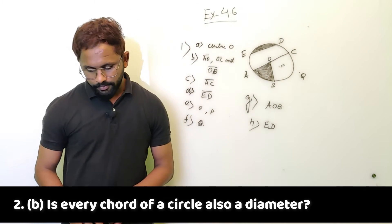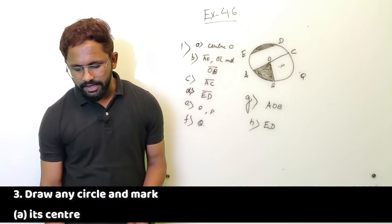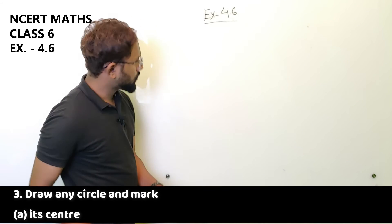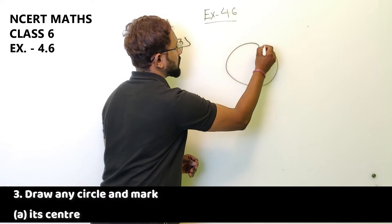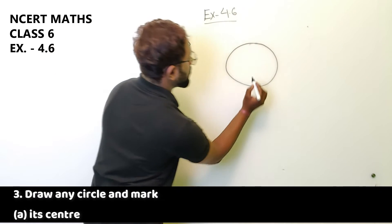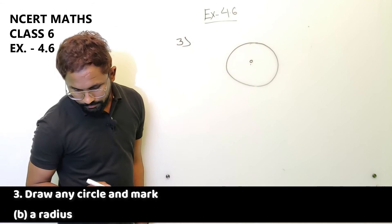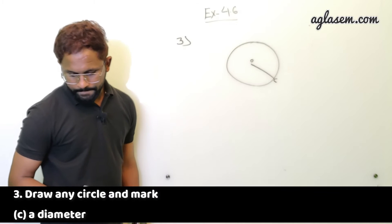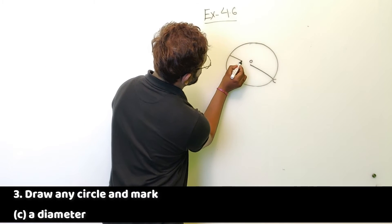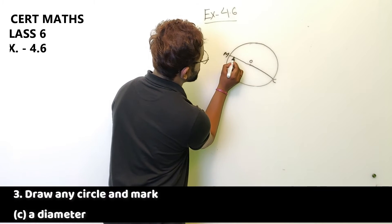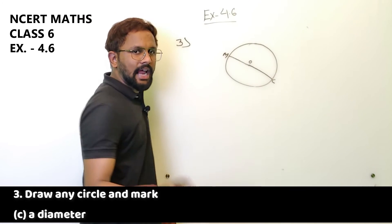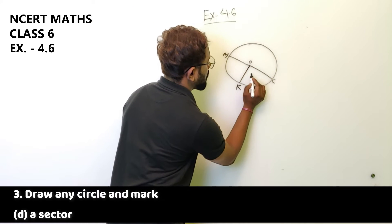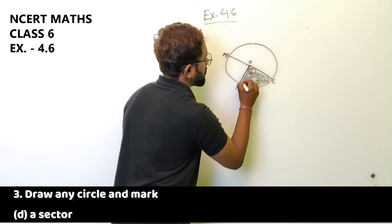Third question, draw any circle and mark. Let's do it over here. We have to draw a circle. Now we have to mark, first part, its center. So this is center, let's say it is point O. B, a radius. C, a diameter. Let's name it M. So MC is the diameter.